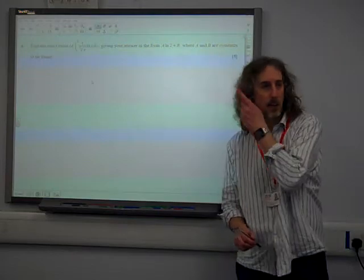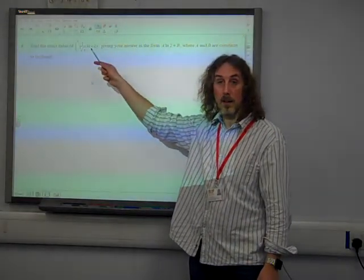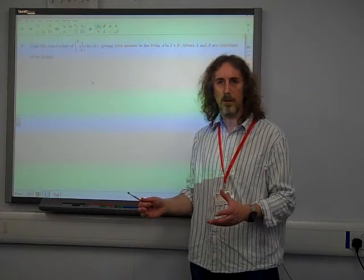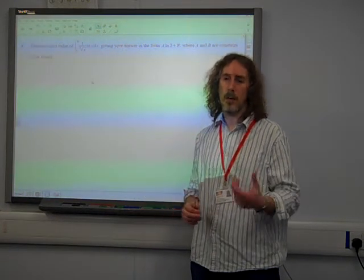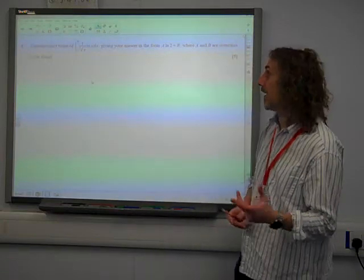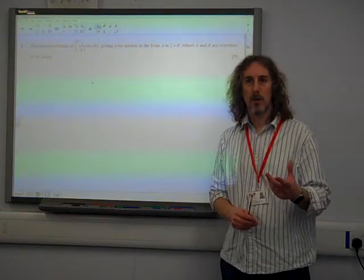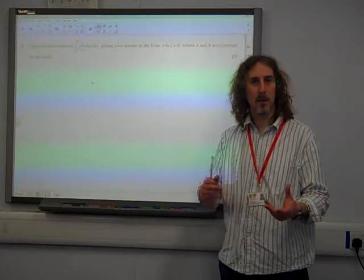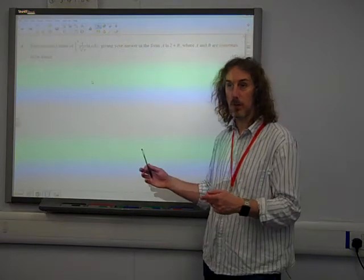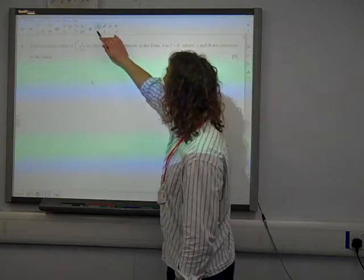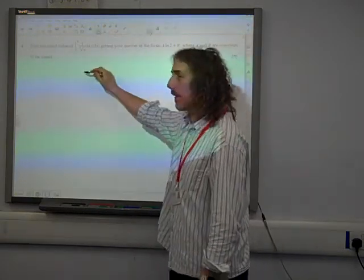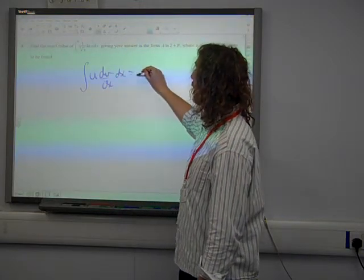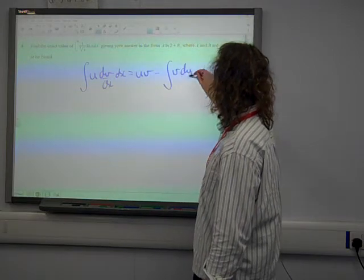Right, we're looking for an exact form. It's two things multiplied together, but they're not related to each other in a differentiation sense. So it's got to be integration by parts. The thing that we know about integration by parts is that when we don't know how to integrate ln(x), but we do know how to differentiate it. So that's the crucial thing. Remember the integration by parts formula: U*dV/dx is U times V minus the integral of V*dU/dx.